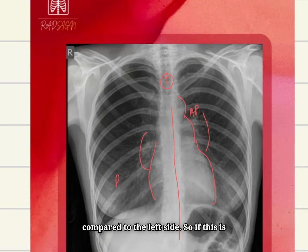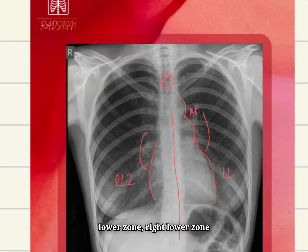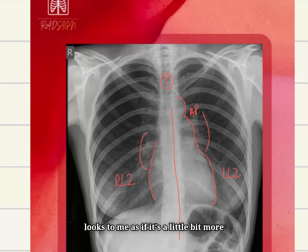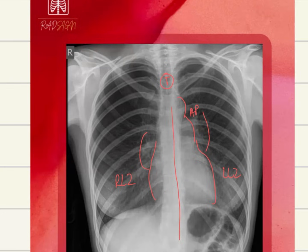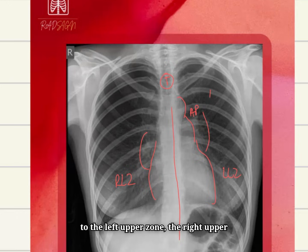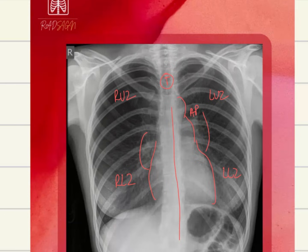So if this is the right lower zone and this is the left lower zone — the right lower zone looks to me as if it's a little bit more opaque. And when you compare the upper zones, compared to the left upper zone, the right upper zone is more radiolucent. So that tells you something.